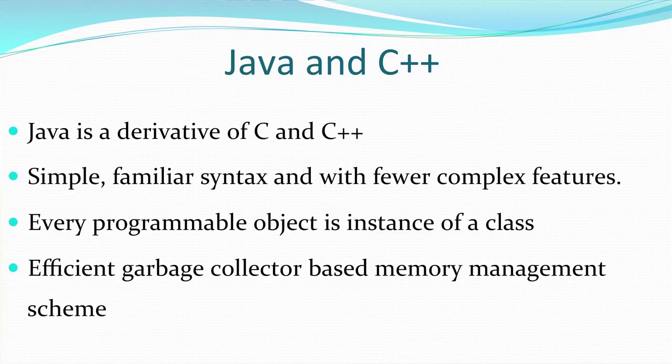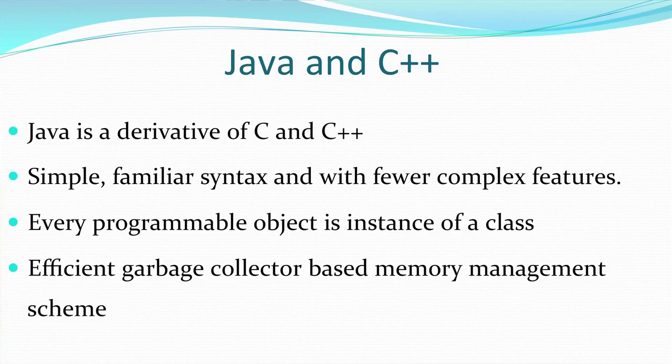Next we move on to Java and C++. Both are languages used to write programs for a computer — a program being a set of instructions given to the computer to perform a particular task. The internet is largely programmed using Java. C++ is the first object-oriented programming language that was used, and Java is an advanced form of object-oriented programming language. Java, which is a derivative of C and C++, has a simple and familiar syntax closer to the English language.